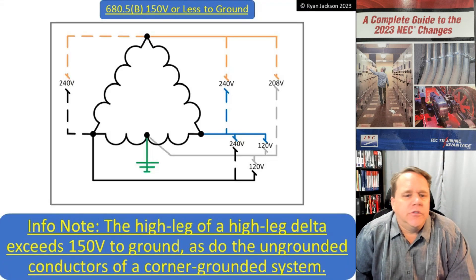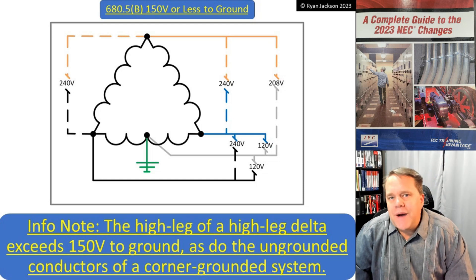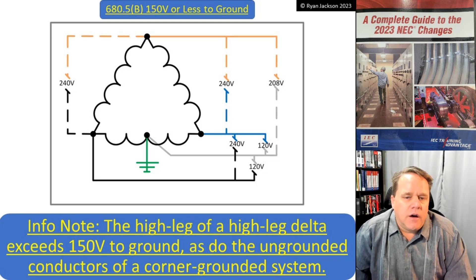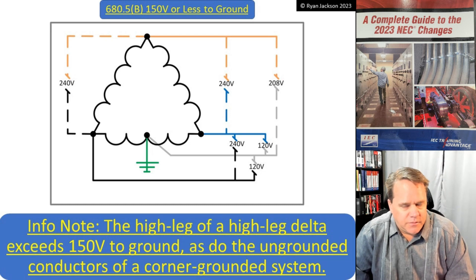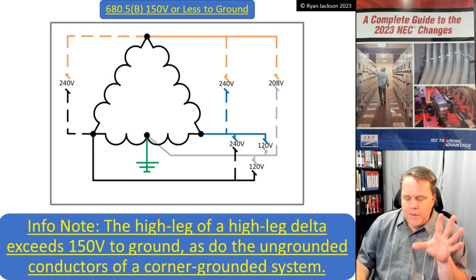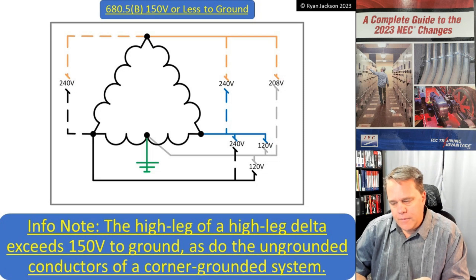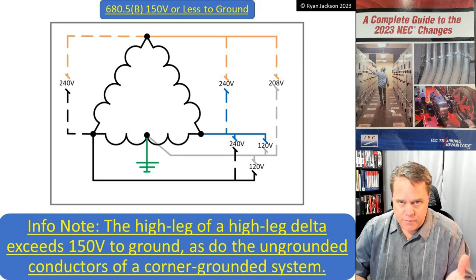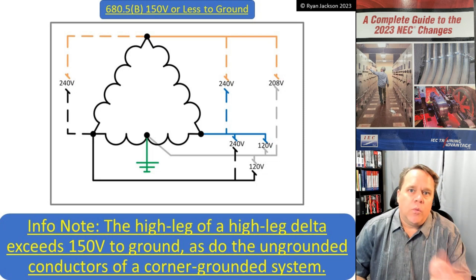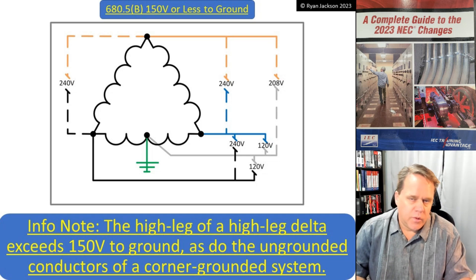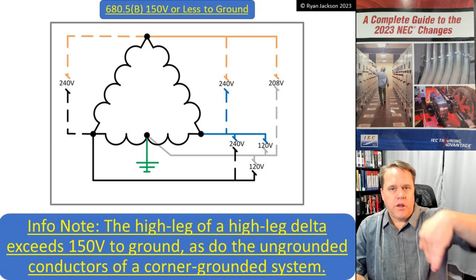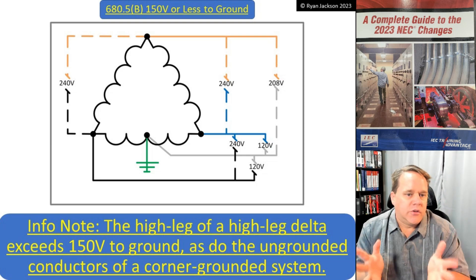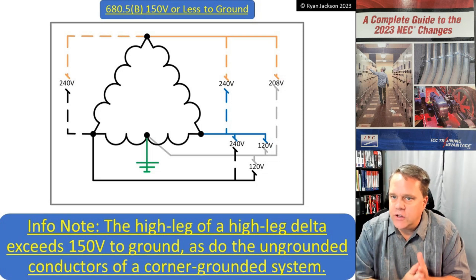There's an informational note that reminds us the high leg of a high-leg delta exceeds 150 volts to ground, as do the ungrounded conductors of a corner-grounded system. So maybe I have a three-phase swimming pool pump that requires GFCI protection. If it's on a 120/208-volt three-phase circuit, then 120, 120, 120 — all of those are less than 150 volts to ground — so you would need Class A GFCI.